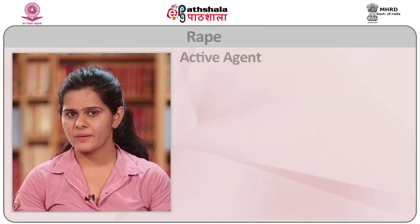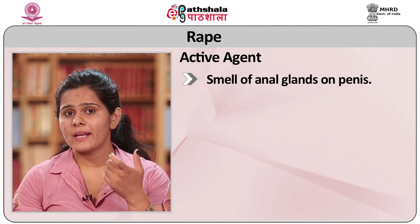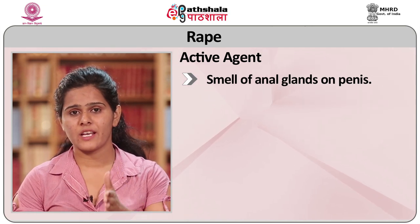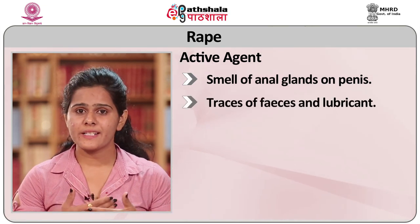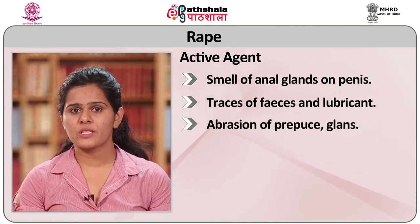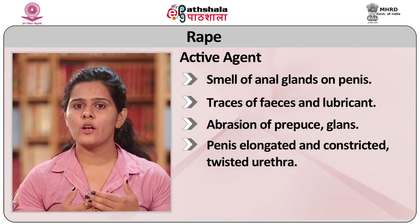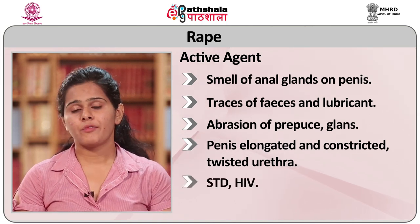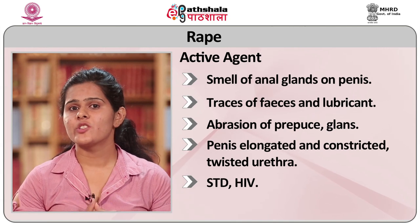Active agents in sodomy show the smell of anal glands on the penis, which provides an evidential clue of recent rape. Traces of feces and lubricants, abrasion of the penile glans, and an elongated and constricted or twisted urethra may be found. Examination should also include testing for STDs and HIV.